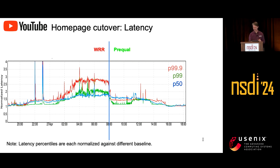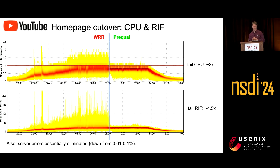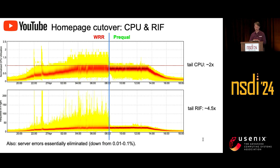You can see a fairly dramatic reduction — for example, the 99th percentile going down from about 2 to a normalized value of 1.2. The other metric we're interested in is peak CPU load. If you have large CPU spikes, you can go outside the allocation for the job, and that's what causes the latency. By controlling very tightly the number of queries and latency, it also controls CPU indirectly. We also very directly control requests in flight, cutting out tails in requests in flight across servers.